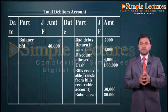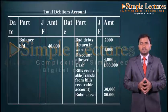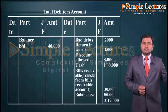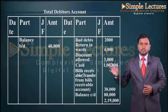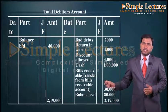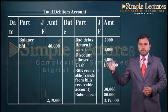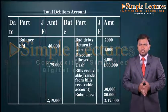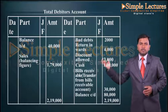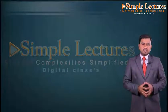Now we have to close the total debtors account so that we can find the total sales. The credit side total is two lakh nineteen thousand; the same total is recorded in the debit side. Two lakh nineteen thousand minus forty thousand — the difference is one lakh seventy nine thousand, which is nothing but the sales. In bracket we can write balancing figure.